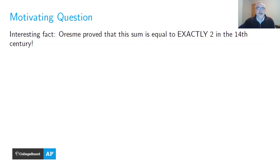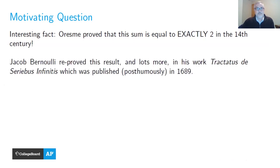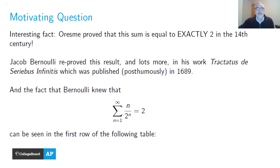A Frenchman named Orem proved that this sum equals exactly 2 in the 14th century. Jacob Bernoulli reproved this and many other results of this form in his work Tractatus de Seriebus Infinitis, written in Latin, published after Bernoulli's death in 1689. The fact that Bernoulli knew this sum was equal to 2 can be seen in a table that comes from that work.